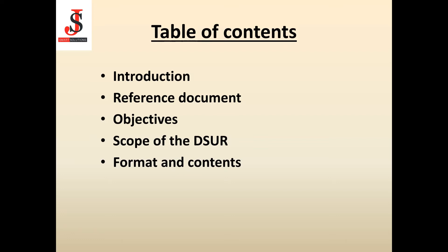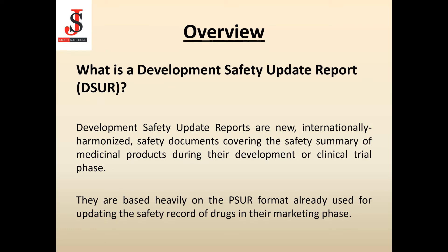Looking at the table of contents, we have introduction, reference documents, objectives, scope of the DSUR, and format and its contents. For the overview: Development Safety Update Reports are internationally harmonized safety documents covering the safety summary of medicinal products during their development or clinical trial phase. They are based heavily on the PSUR format already used for updating the safety record of drugs in their marketing phase.